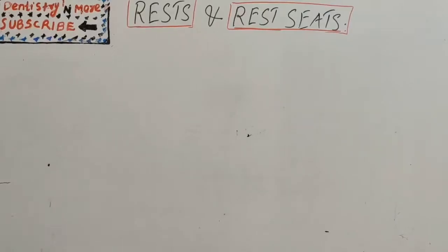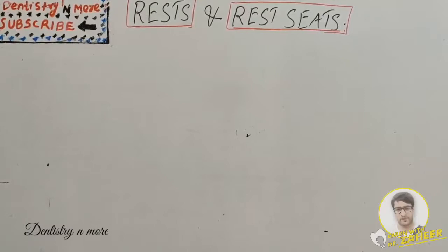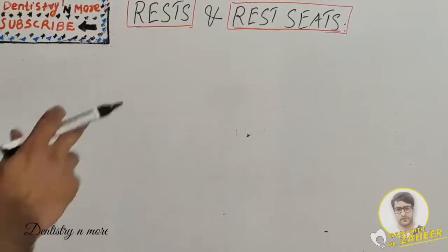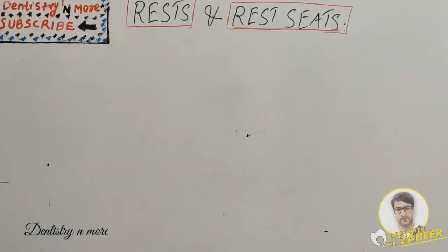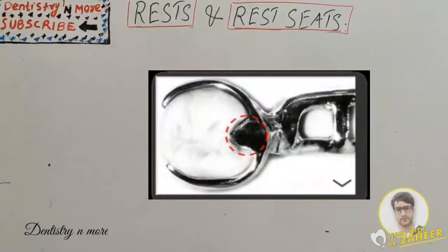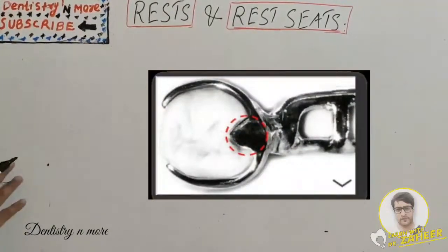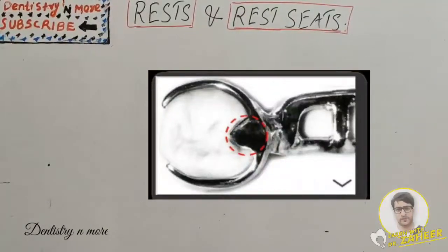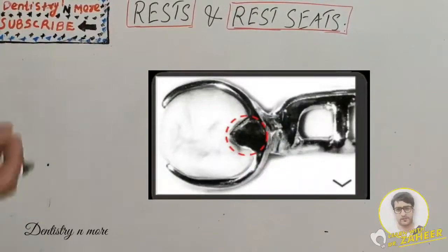Welcome back to another session in dentistry. We are continuing our prosthodontic sessions, and today's topic is the rest and rest seats. Today's session will discuss in detail the various types of rest and rest seats, the preparation of rest seats, their properties, advantages, and disadvantages. Rest are placed on tooth restoration or enamel only.